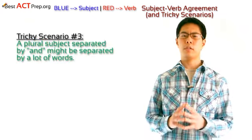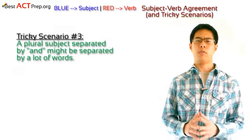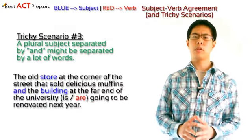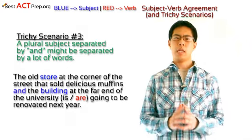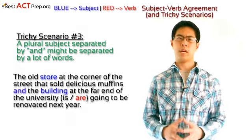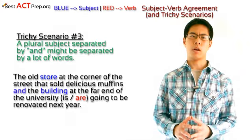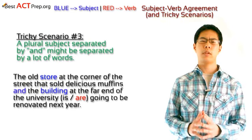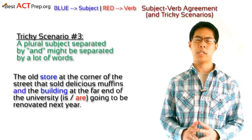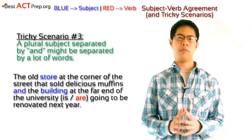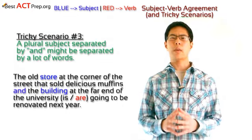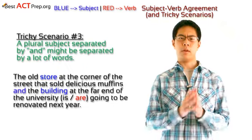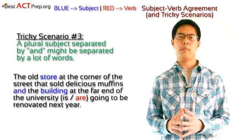Tricky scenario number three: a plural subject joined by 'and' might be separated by a lot of words. Take a look at the following example: 'The old store at the corner of the street that sold delicious muffins and the building at the far end of the university is or are going to be renovated next year.' Here, there are two different subjects joined together by the conjunction 'and,' so they need to take the plural verb 'are.' This example can be tricky because there are so many words that separate the subjects from one another and from the verb.